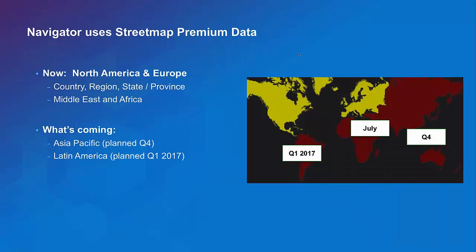Navigator includes street map premium data. We have coverage for all of North America and Europe today, at different scales — by country, by region, state or province. It's also available with content for the Middle East and Africa. We're rolling out support for Asia Pacific, with Latin America to be completed early next year. We update this data quarterly. Within Navigator, if you have a map downloaded, you'll recognize when a new version of the map is available and can download that new map directly.